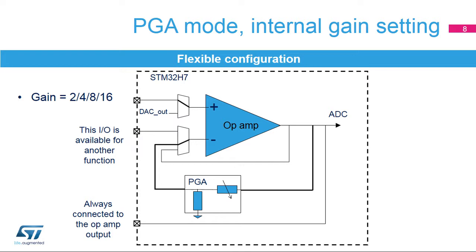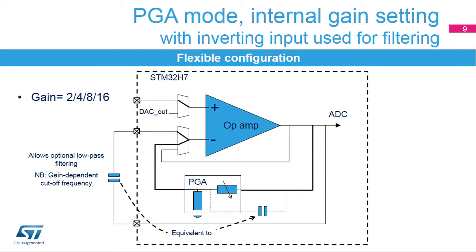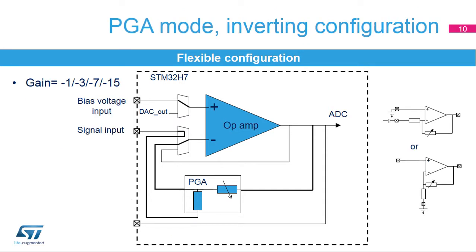It may also be beneficial to use the op-amp as an ADC input so that the full dynamic range of the analog-to-digital converter can be applied to signals having a small amplitude. The op-amps also support external connections on outputs and the non-inverting input to create the PGA mode. This enables the connection of an external capacitor to add low-pass filter characteristics to the PGA configuration.